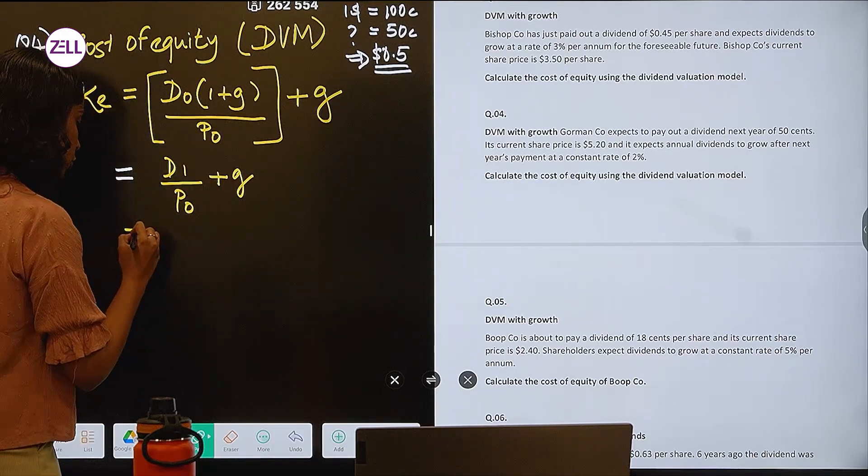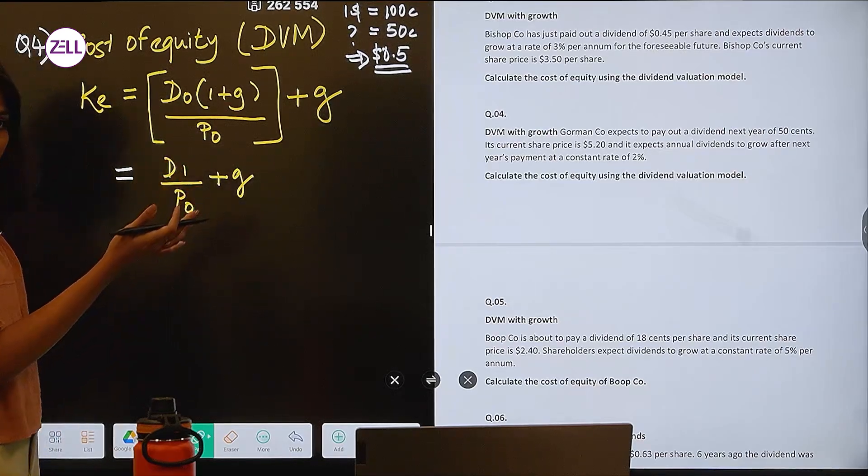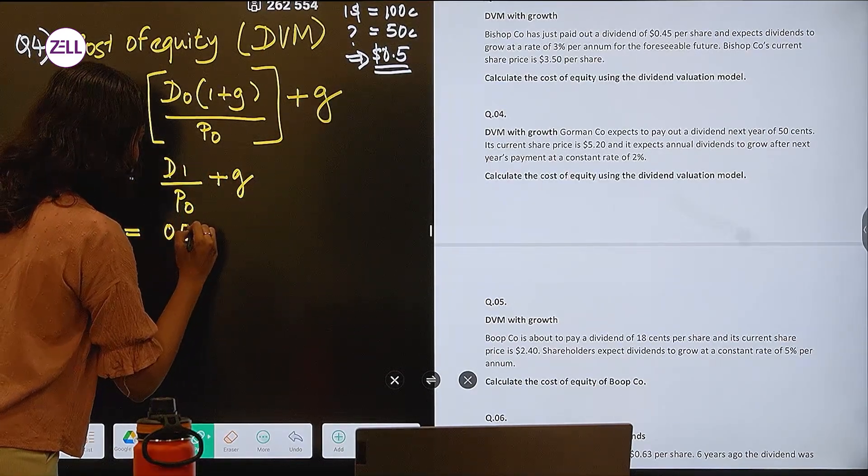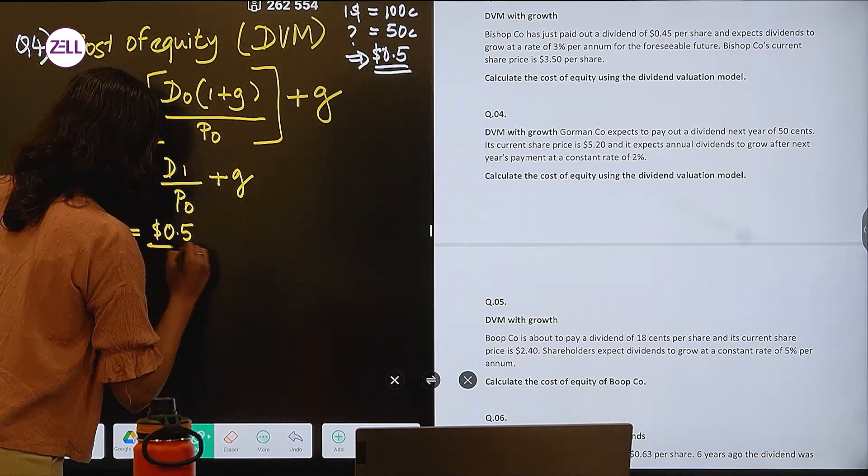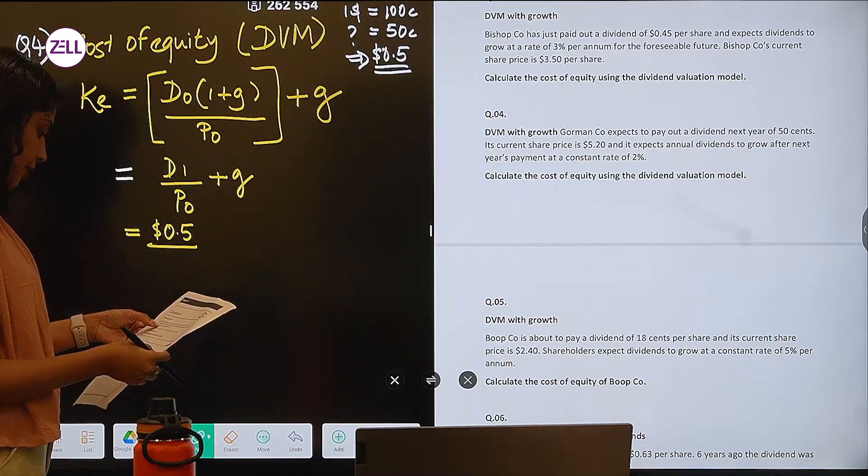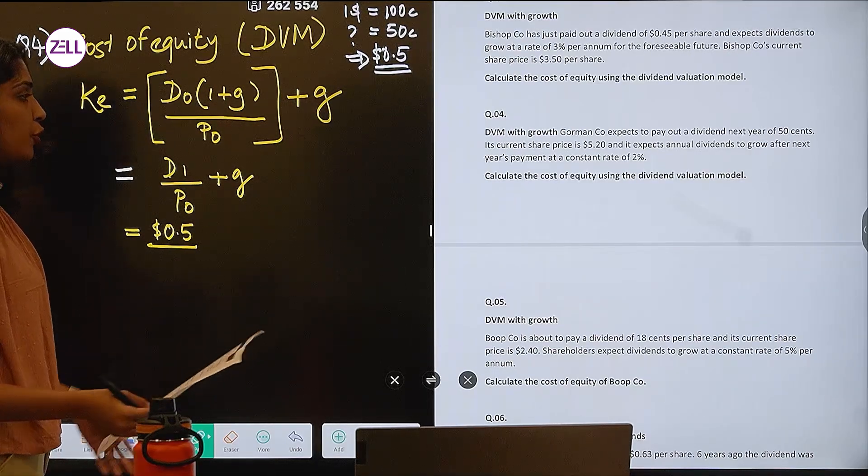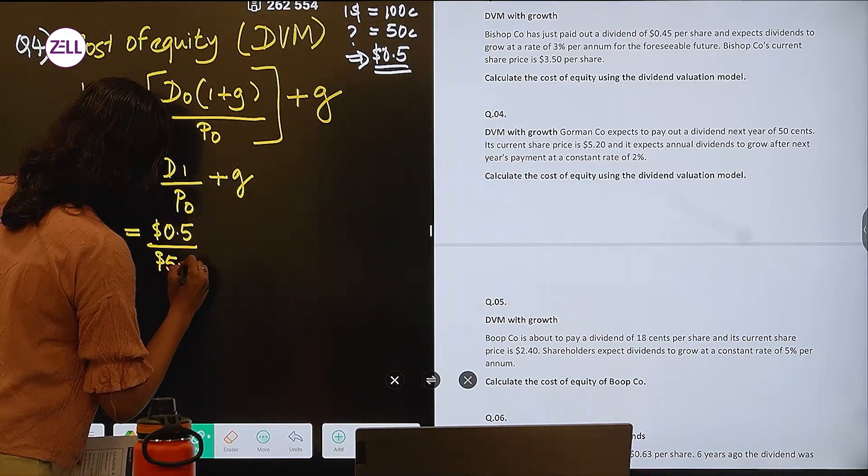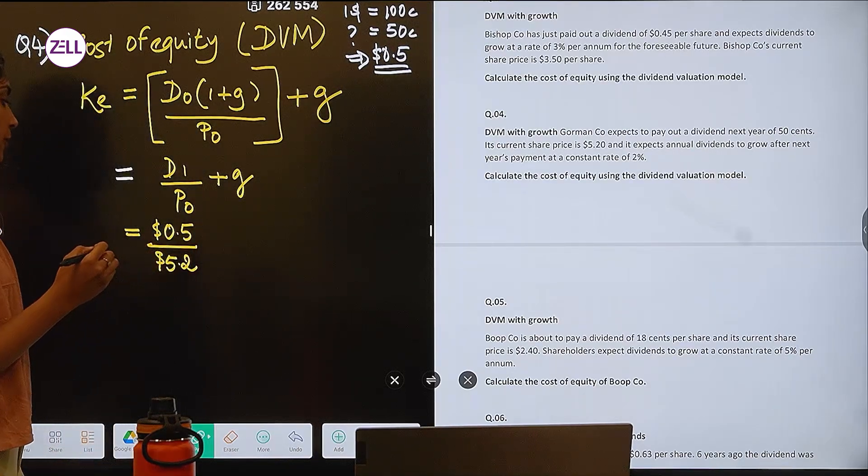So this is the formula we can cut it short to this. So how much is it going to be? Your D1 is 50 cents, which is nothing but 0.5 dollars. Divided by what is your market price of the share? Its current share price is 5.2 dollars.